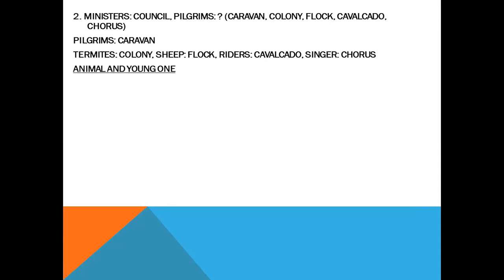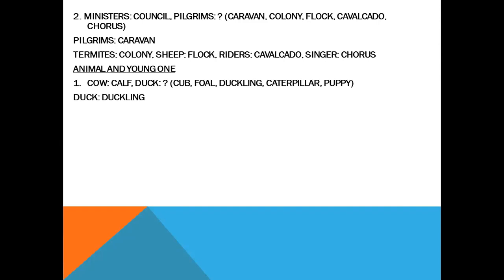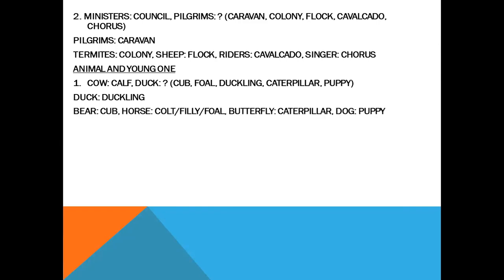Animals and young ones. Cow — calf. Duck — what? Options: cub, foal, duckling, caterpillar, puppy. Duckling is the young one of duck. Cub is the young one of bear. Horse — foal, colt, or filly. Dog — puppy.